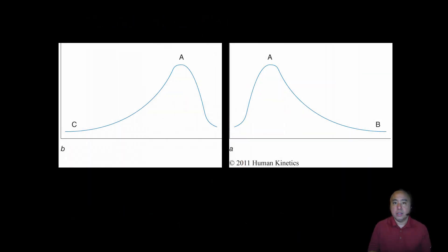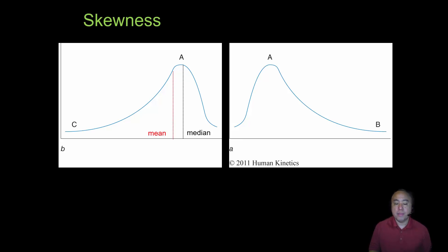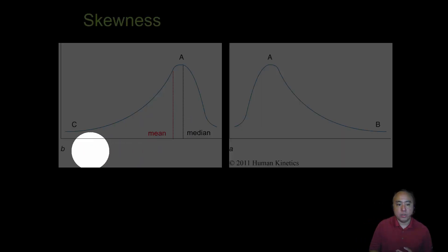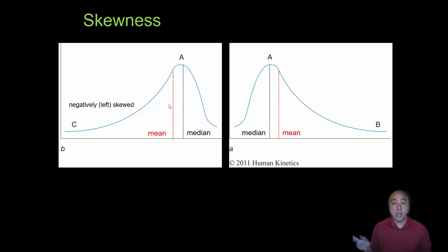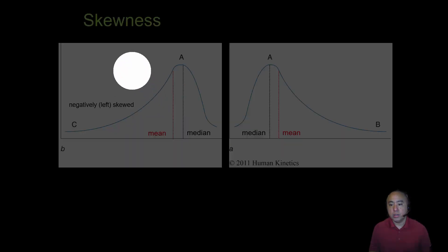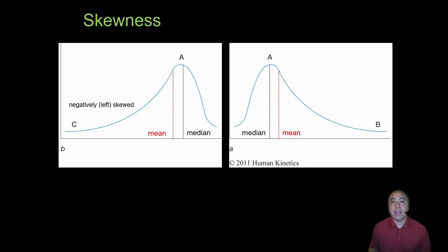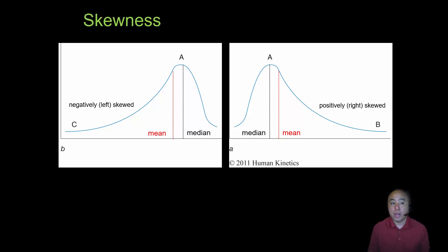However, in reality the distribution may be skewed one way or the other. On the left, the median is greater than the mean because the lower half of scores tends to pull the mean in the negative direction — we call that negatively or left-skewed data. On the right, the median is less than the mean because the higher scores pull the mean toward the right, so we call that positively or right-skewed.